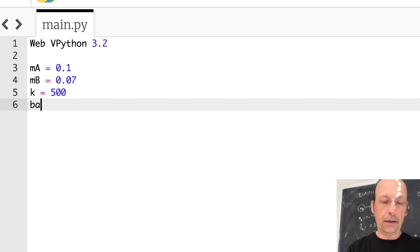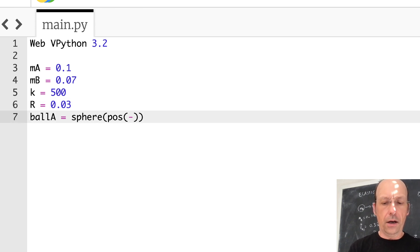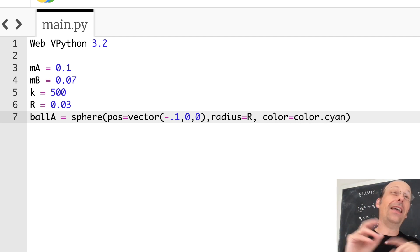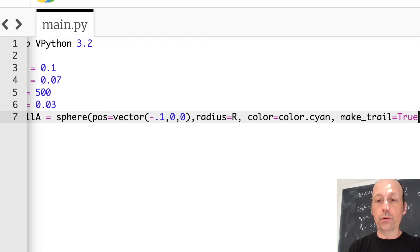Now let's just make our masses. So I'm going to call it ball A. Ball A is a sphere. And now I don't want to put these too far apart, right? Because I want them to be able to move and collide. So I'm going to put ball B at the origin. And this one I'll put at a position of negative. The radius, let's say the radius is 0.03, which is kind of big. So let's put this at negative 0.1. Position equals vector negative 1, 0, 0. Radius equals R. Color equals color dot cyan. And then let's have it make trail equals true.